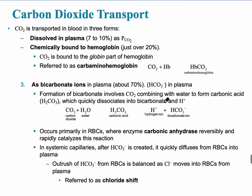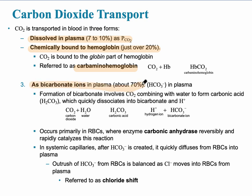Carbon dioxide transport is somewhat similar; however, it travels in the blood in three different ways. One way is dissolved in the plasma, which accounts for about 7 to 10%. Then there is some chemically bound to the hemoglobin — just over 20%, significantly less than oxygen — and when bound to hemoglobin it is referred to as carbaminohemoglobin. The remaining 70% travels in the form of bicarbonate ions.